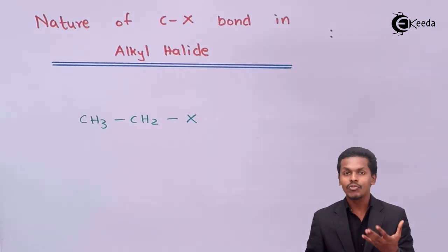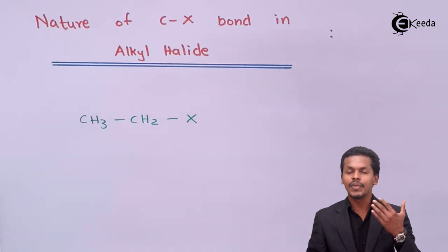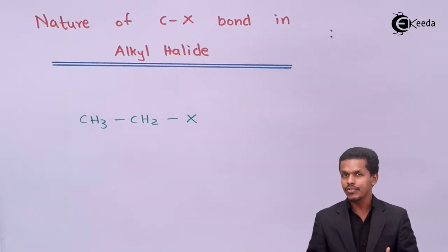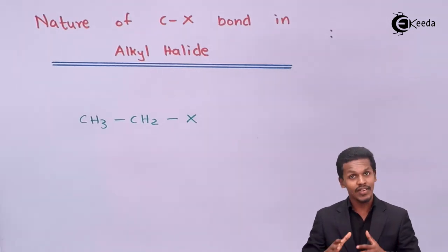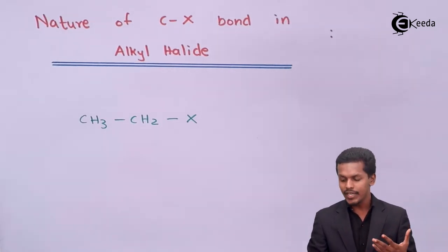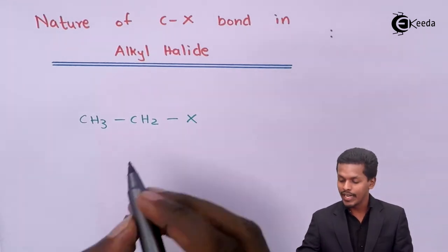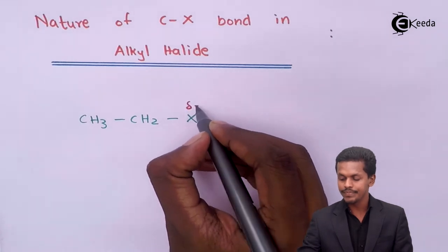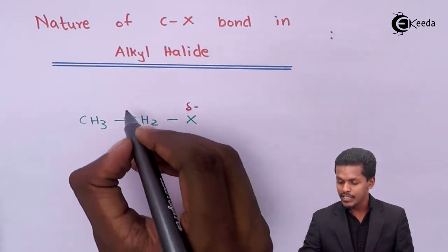Halogen atoms are among the most electronegative elements in the periodic table. We are talking about the halogen series starting from fluorine, chlorine, bromine, and iodine. Fluorine is the most electronegative element in the periodic table and in the halogen series. Therefore, the halogen acquires a partial negative charge, while the carbon acquires a partial positive charge.